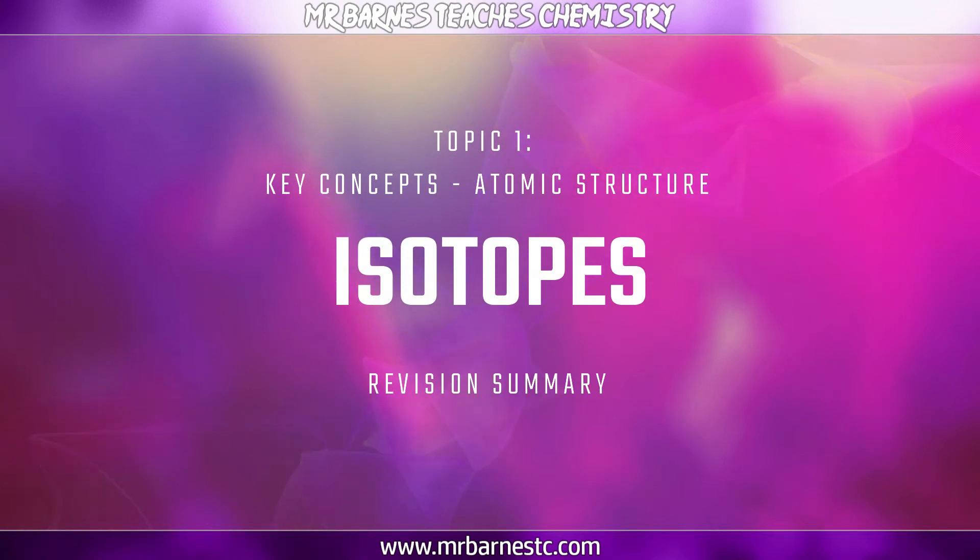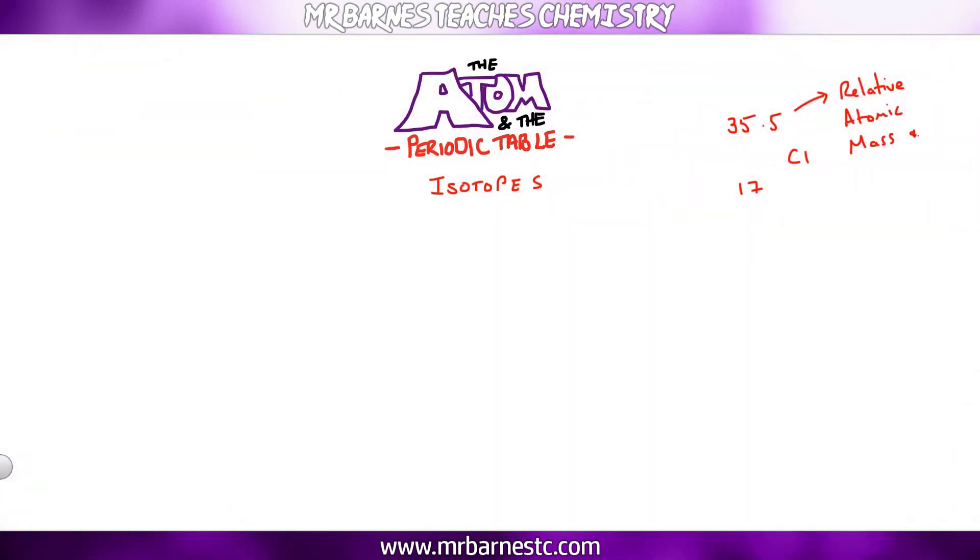Now you'll have also noticed on your periodic table there are elements that have non-whole numbers. So for example chlorine, that's the most famous example, it has a relative atomic mass of 35.5. Now that relative atomic mass is the average mass of all the isotopes. So there are lots of different isotopes of chlorine, the two main ones being chlorine 35 and chlorine 37, of which there's 75% of chlorine 35 and 25% of chlorine 37.